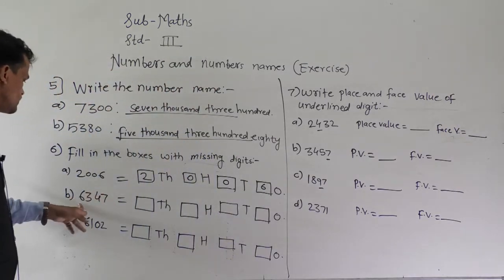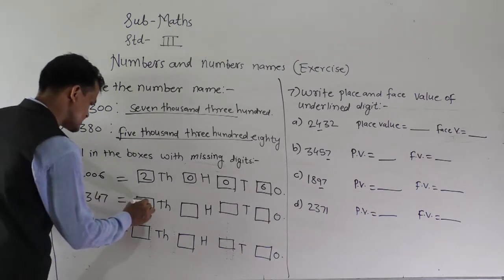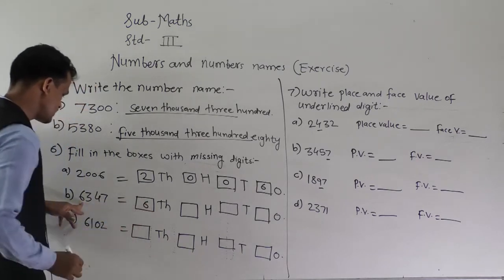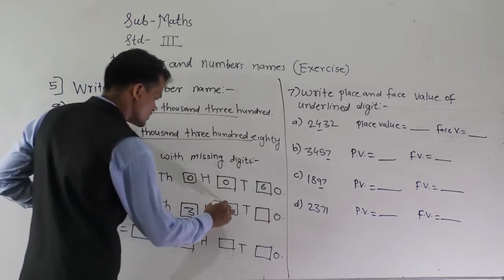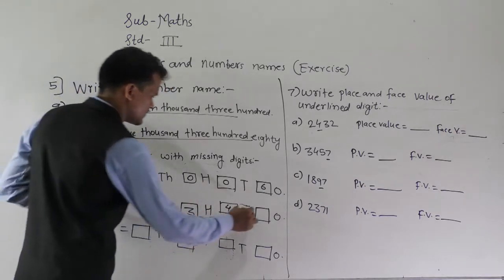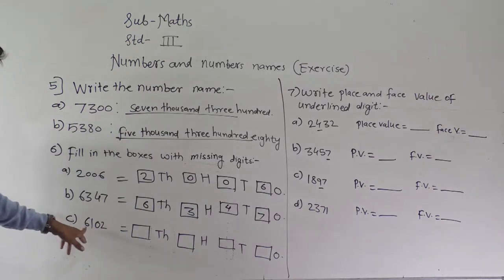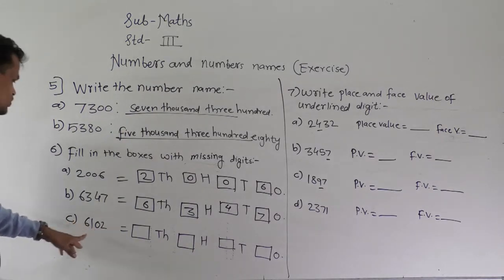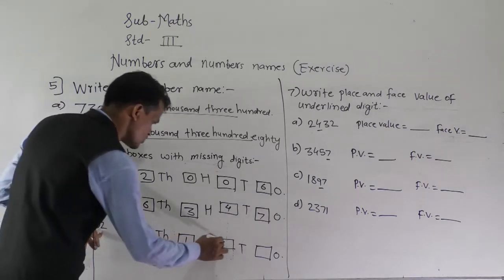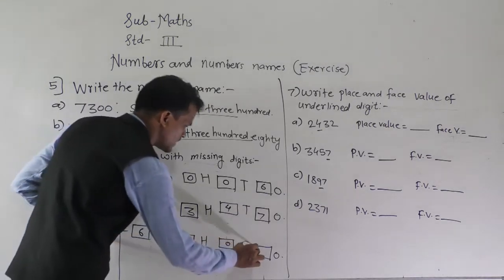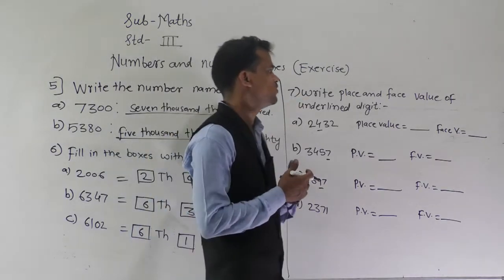Then 6347: 6 is at thousand place, 3 is at hundred place, 4 is at ten place, and 7 is at one place. Next, write this number — 6102: 6 is at thousand place, 1 is at hundred place, 0 is at ten place, and 2 is at one place.